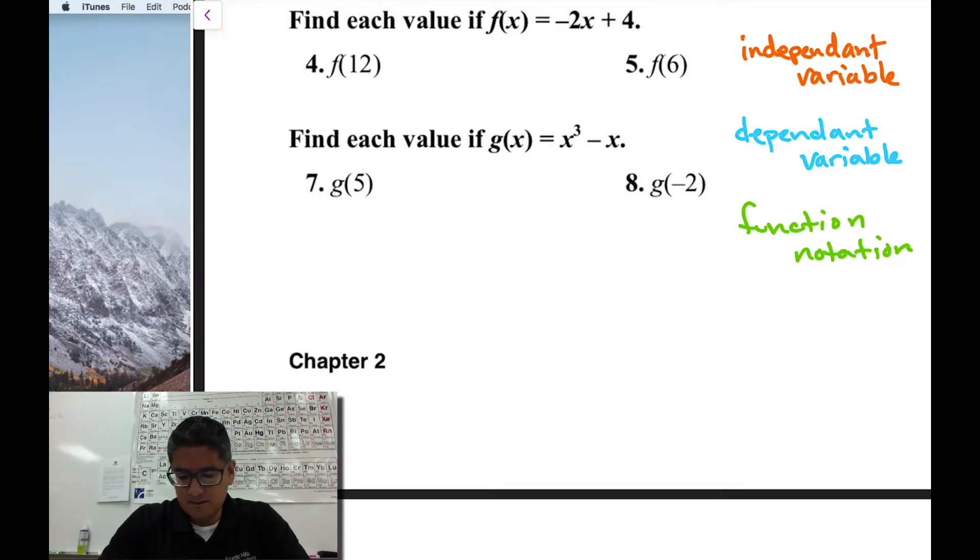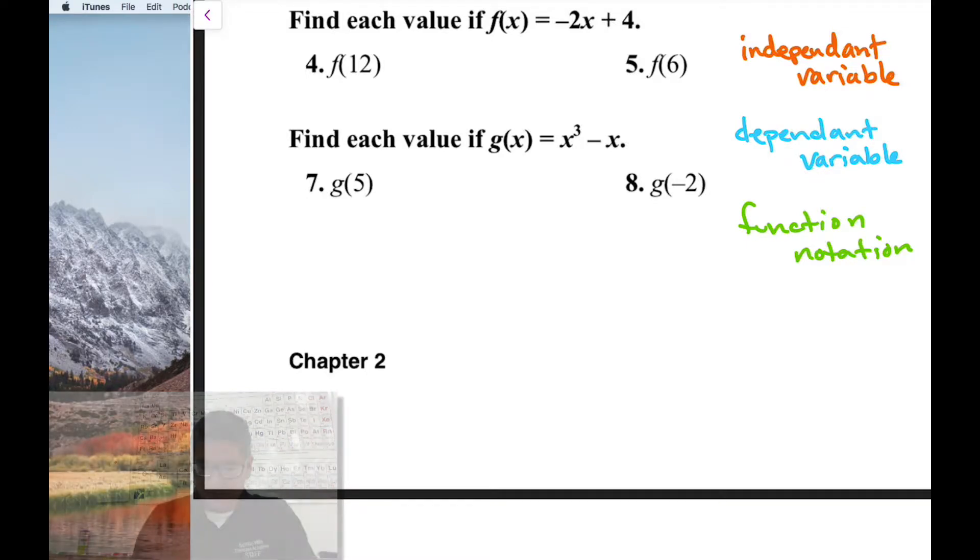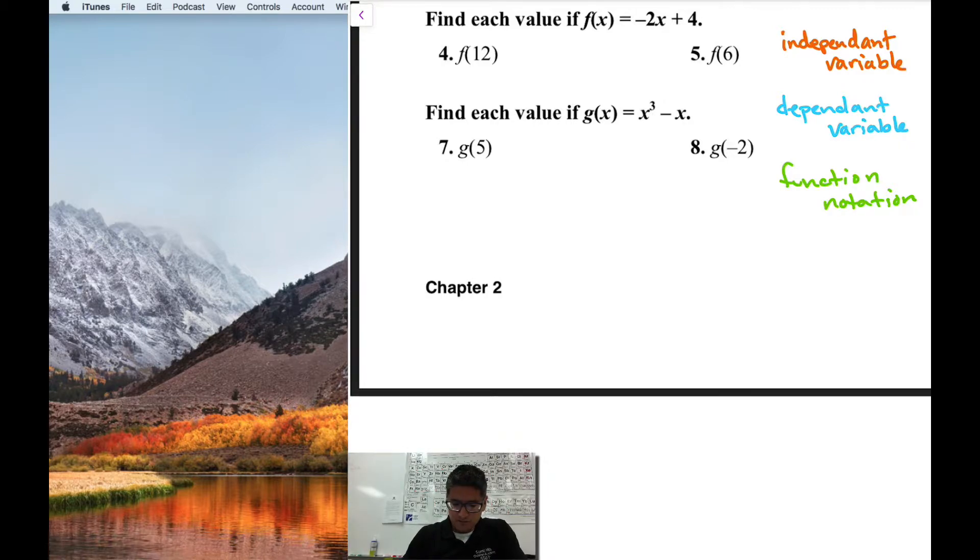What we're dealing with is function notation. Traditionally, you're used to looking at functions or equations as y equals and then something else, in this case negative 2x plus 4. That y equals in function notation technically means that this is a function of x for negative 2x plus 4. What a function of x means is that this equation is dependent on this variable right here.